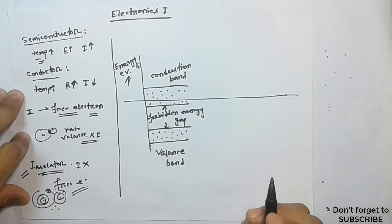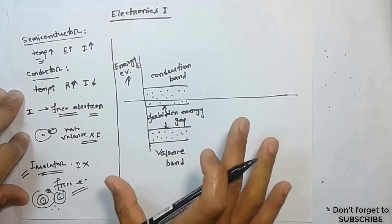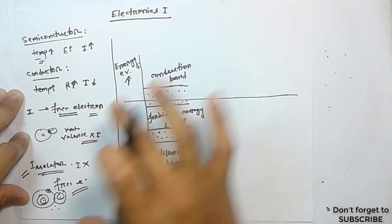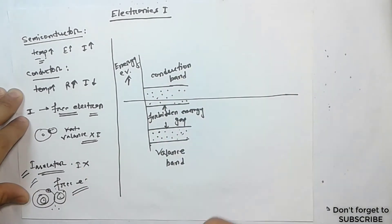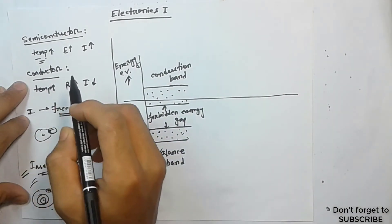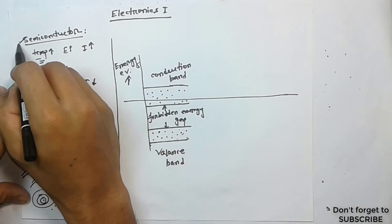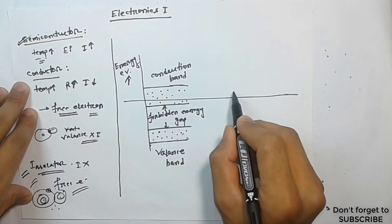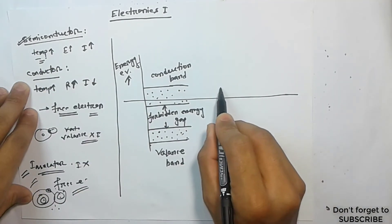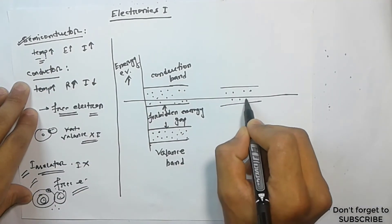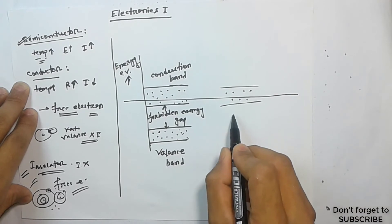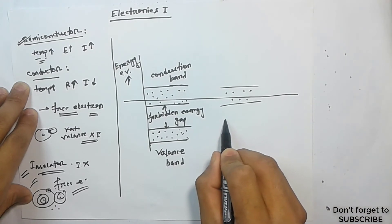Basically, this is the insulator — with the conduction band and the valence band. This is the semiconductor band. The conduction band and the valence band are the key features of the semiconductor band.